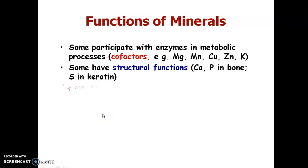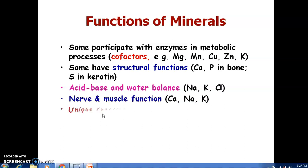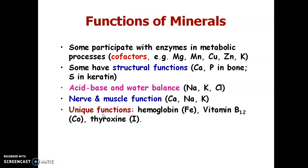Next, for acid-base and water balance in our body, sodium, potassium, and chlorine are the minerals or ions which are required. Next, for nerve and muscle functions — for the smooth and proper functioning of nerves and muscles — calcium, sodium and potassium are the minerals required by our body.